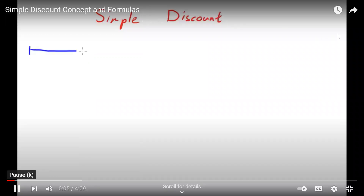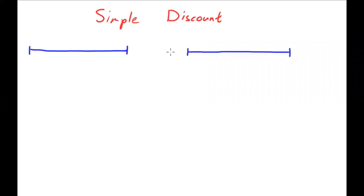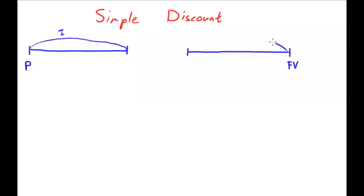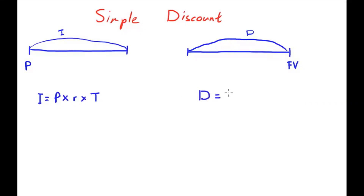Today we're going to talk about simple discount in reference to simple interest. In simple interest, you invest P and use it to determine interest earned. Simple discount is almost the opposite — it uses your future value to determine how much discount you earn. That is the key difference. The simple interest formula is I equals P times rate times T. The simple discount formula is D equals future value times discount rate times time.